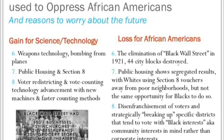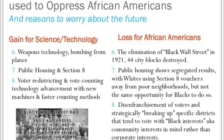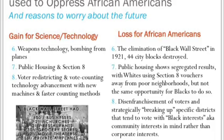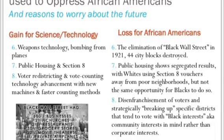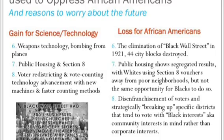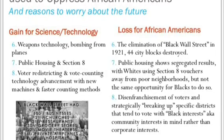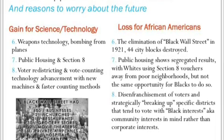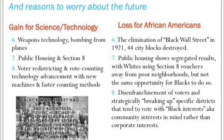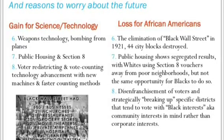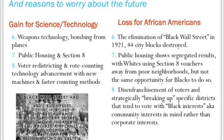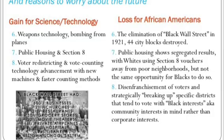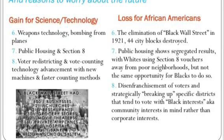Public housing and Section 8 was a gain for urban planning but showed segregated results: whites were allowed to use Section 8 vouchers to move away from poor neighborhoods but Blacks were not given the same opportunity. Voter redistricting and vote-counting technology advanced with electronic methods and faster counting, but this led to disenfranchisement of voters and the strategic breaking up of districts that tend to vote with community interests in mind rather than corporate interests.